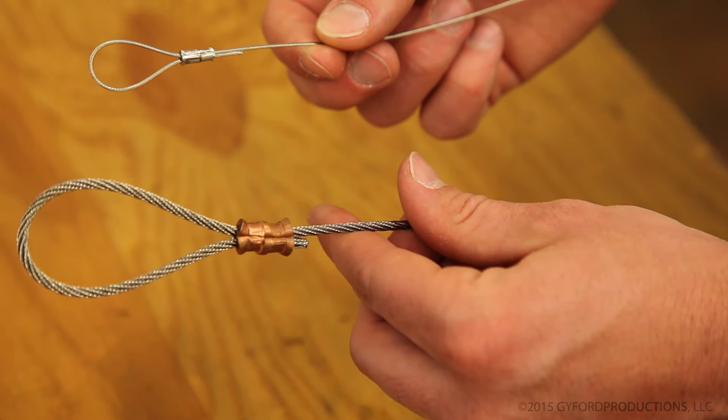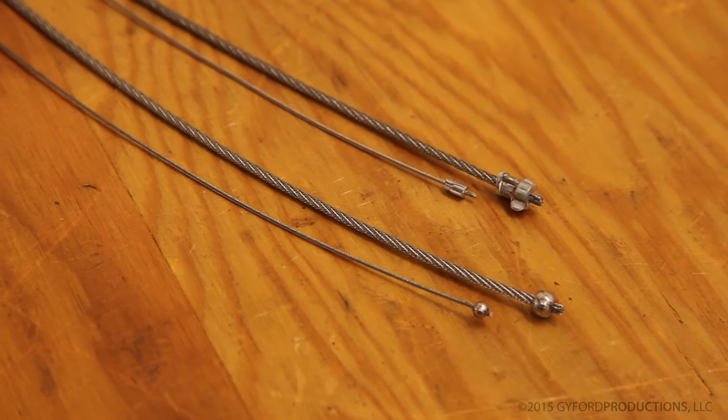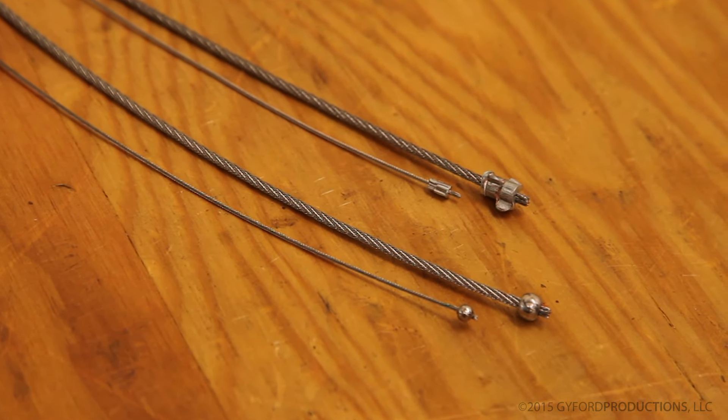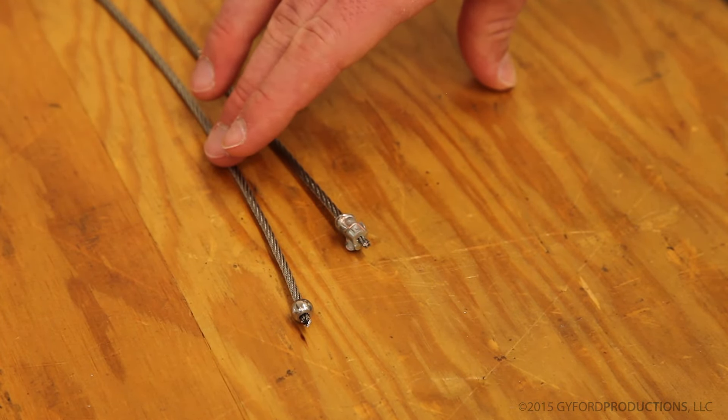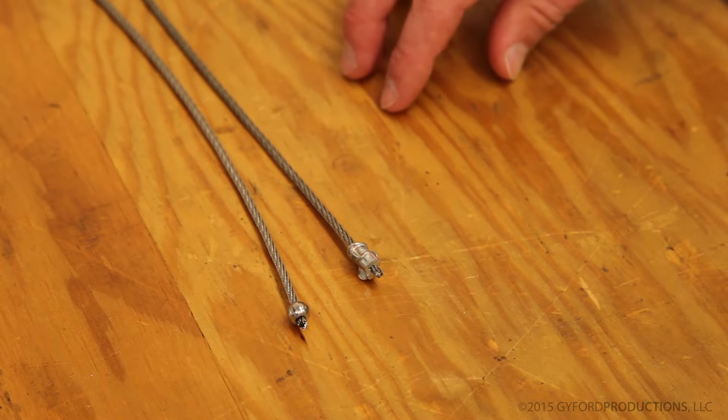Oval crimp sleeves are a means to end your wire in a loop, while stop crimps are swaged on as a metal stopper at the end of your wire. We also offer two types of stop crimps: those made of stainless steel and those made from copper alloys.